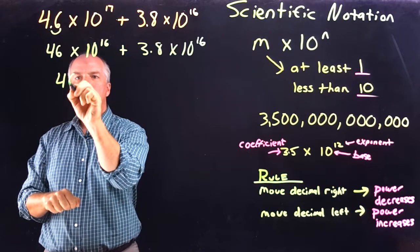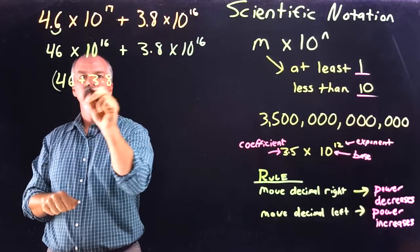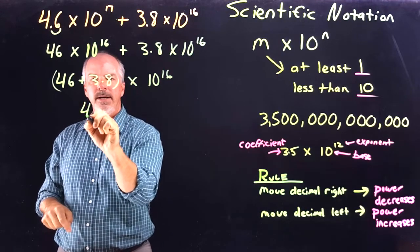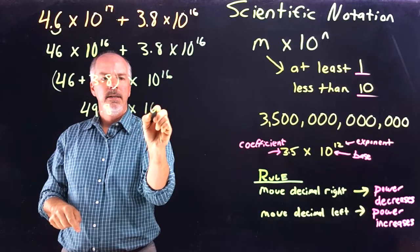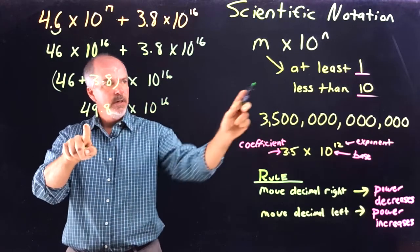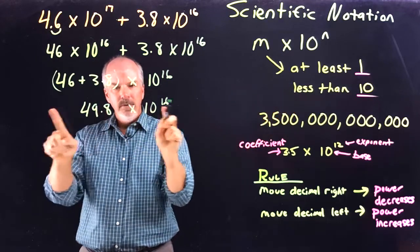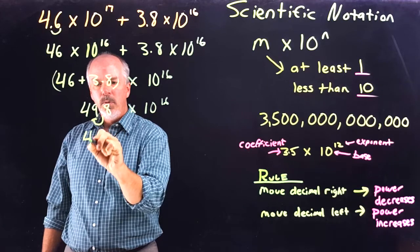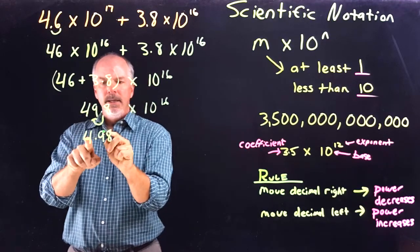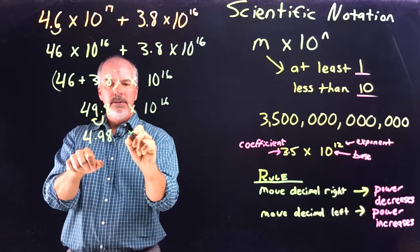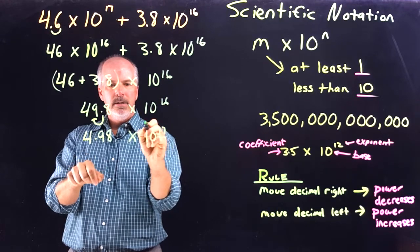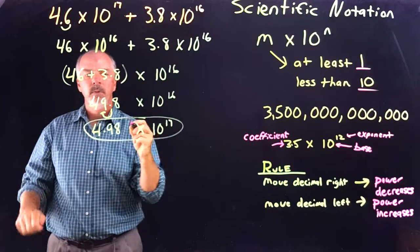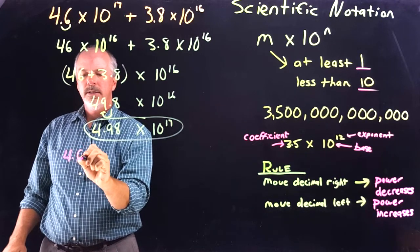Now we add 46 plus 3.8, all times 10 to the 16th, which becomes 49.8 times 10 to the 16th. But is this scientific notation? The coefficient must be at least 1 and less than 10 — 49.8 is not less than 10, so we move the decimal one place left to get 4.98. If we decrease this side we have to increase the power, so it becomes 4.98 times 10 to the 17th.